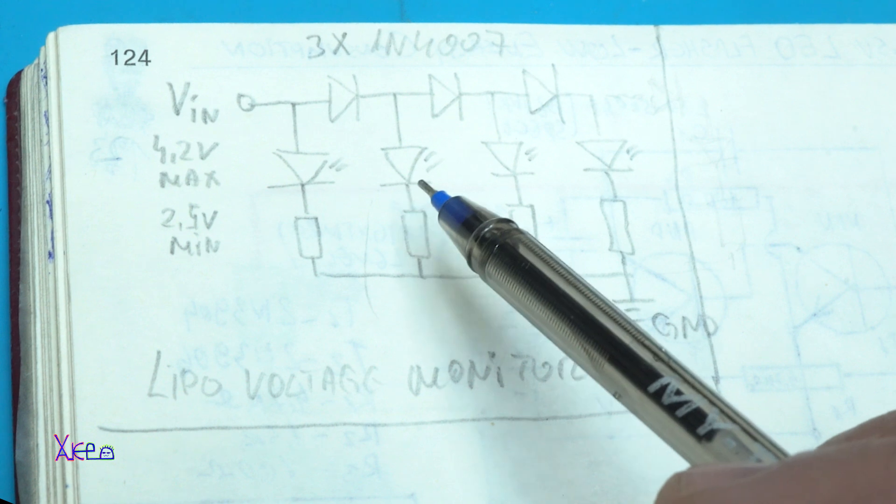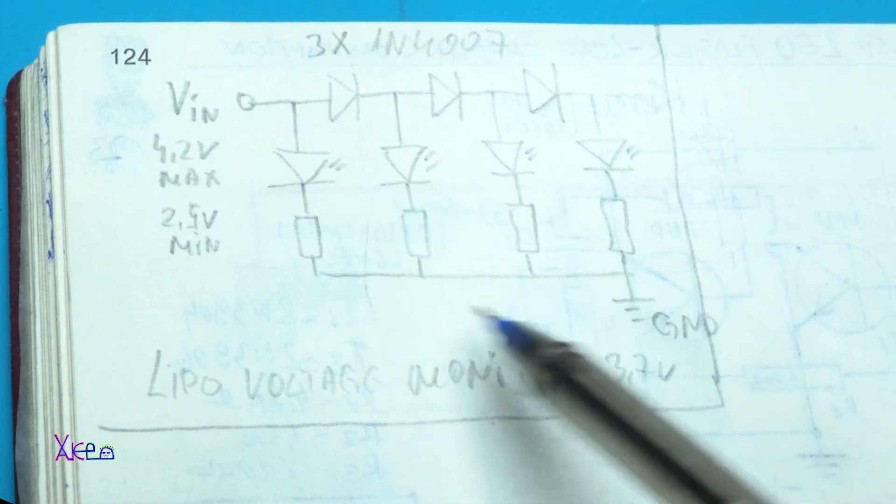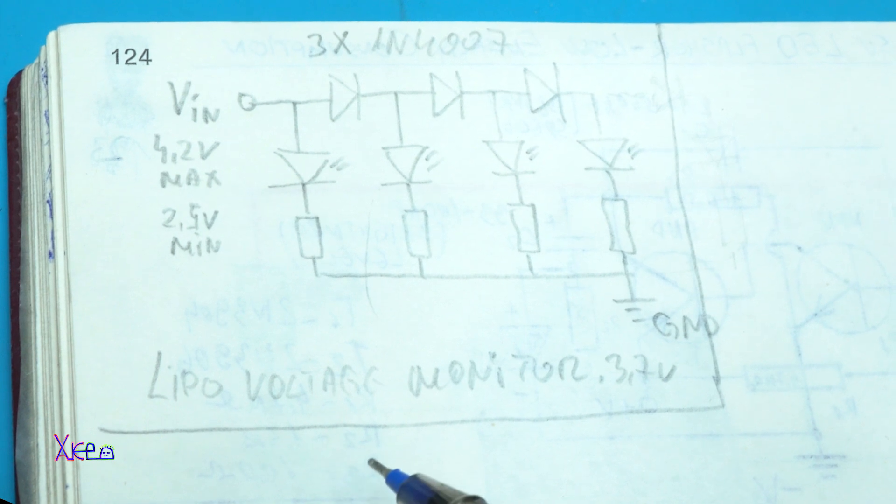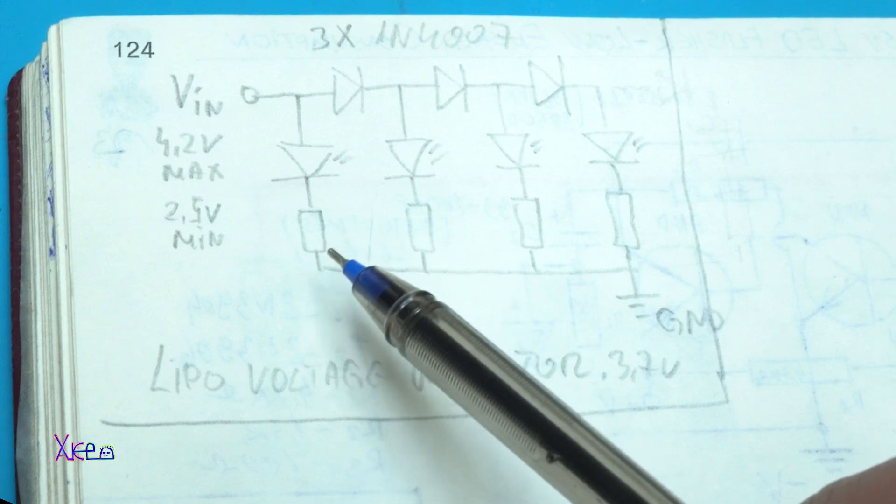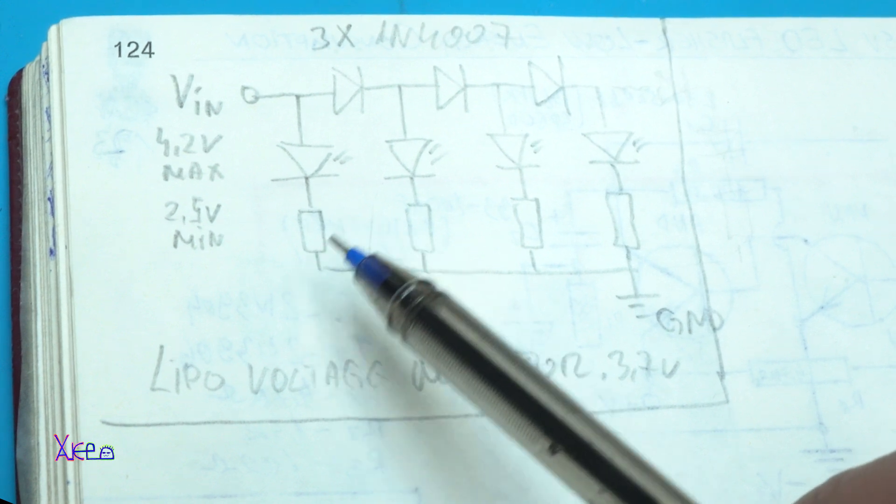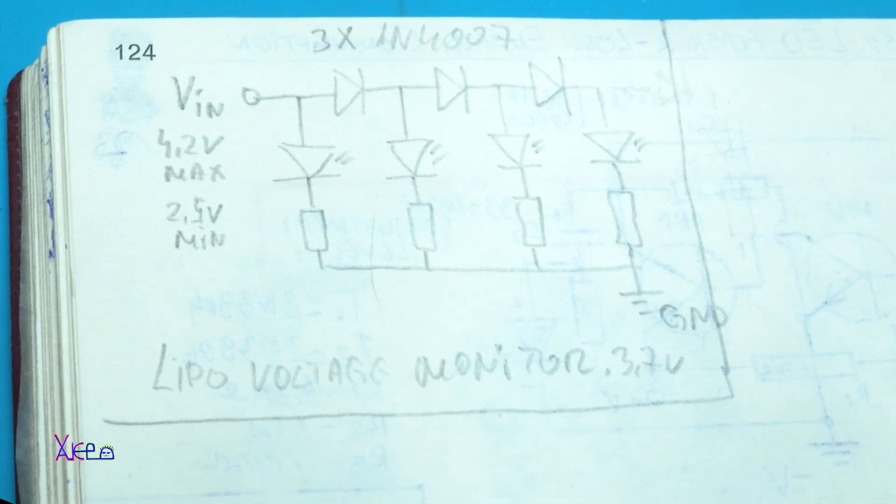So we can get a correct measurement for voltage monitor for the lithium battery. This can work from around 2.5 or 2 volts minimum to 4.2 volts maximum. Okay, let's build the circuit now.